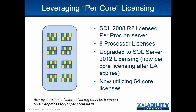SQL Server 2012's big licensing change is per core instead of per processor. Before 2012, for each socket you had to license on a per-processor basis — it didn't matter how many cores you had, it was based on the physical socket on the motherboard. That's no longer the case. It's moving to per core because you're now getting into high core counts: ten, twelve, even more cores per socket. So they really had to change the game to account for that.